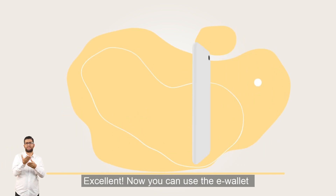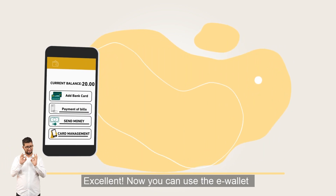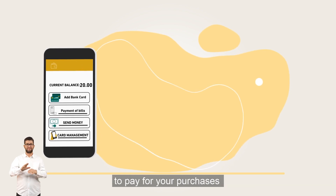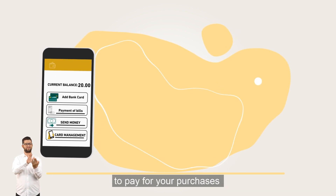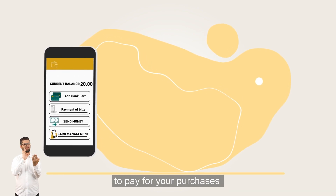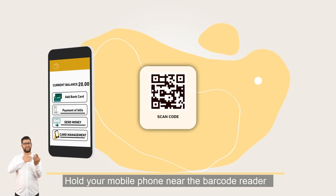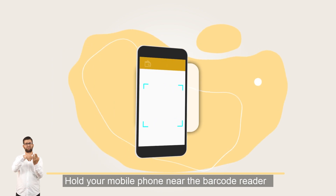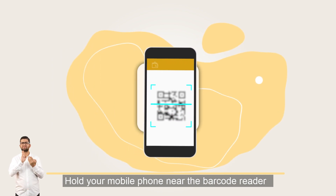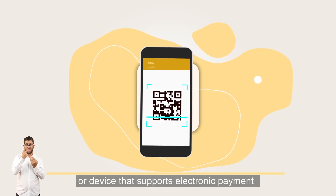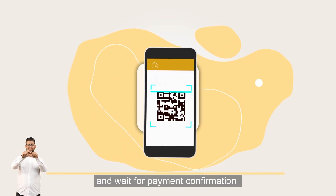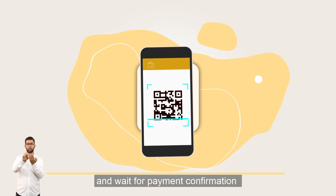Excellent! Now you can use the e-wallet to pay for your purchases. Hold your mobile phone near the barcode reader or device that supports electronic payment and wait for payment confirmation.